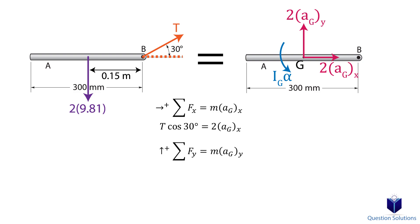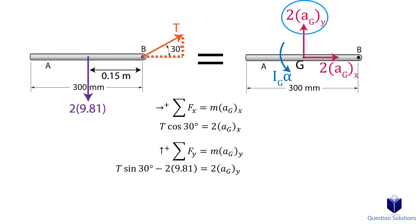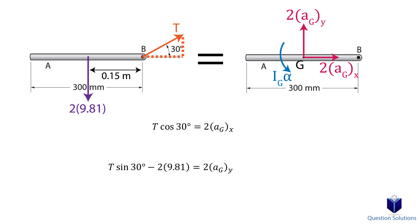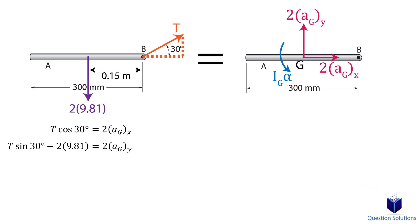For the y-axis equation, we have the y component of tension and the weight on the left side, and mass times y-component of acceleration on the right. Since we have two equations with three unknowns, we need another equation — a moment equation about the center. Before writing it, we need the mass moment of inertia for the bar using the slender bar equation. The mass is 2 kg and the length is 0.3 meters.